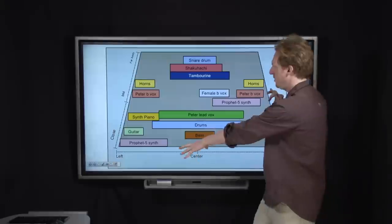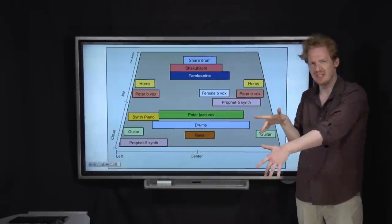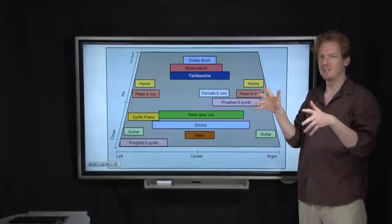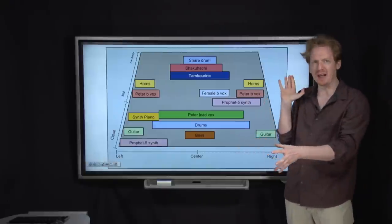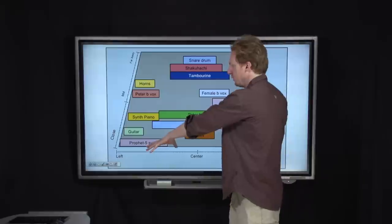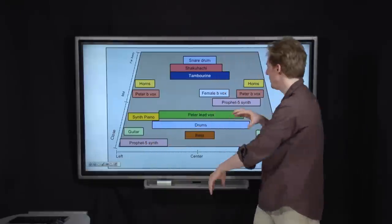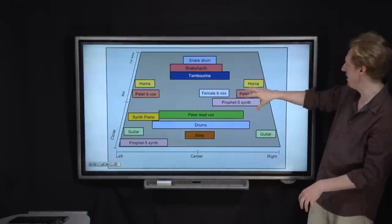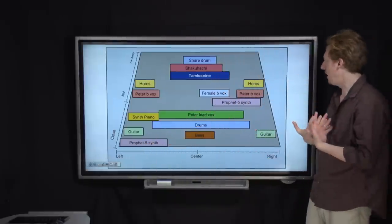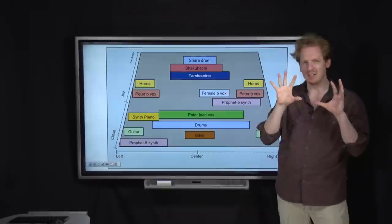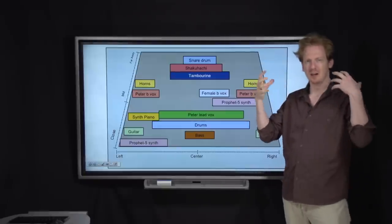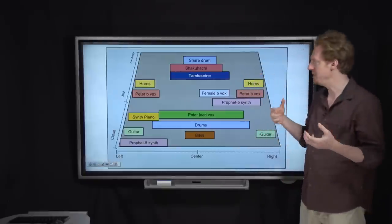Another thing to notice is that we've got two different locations for the Prophet 5 synth. That's that kind of organ-y sound. We think there are two different tracks of it, one of which is really dry and all the way on the left, and one of which has a little more reverb on it and is over on the right. So it's interesting that they've taken the same sound and given it two very different locations. I think it helps enrich the sound image.